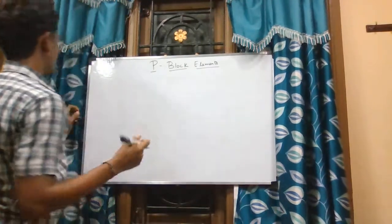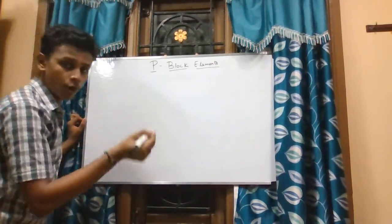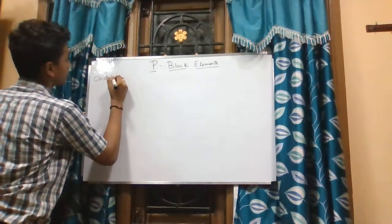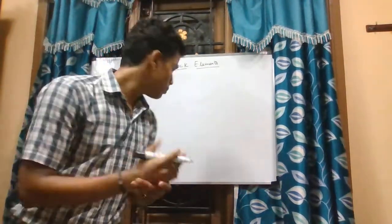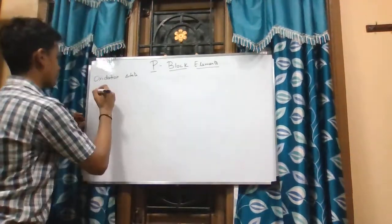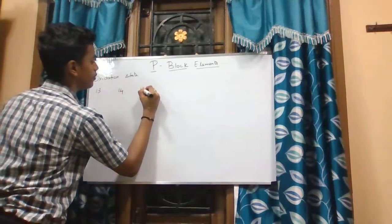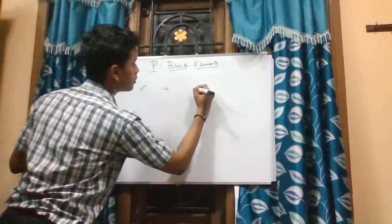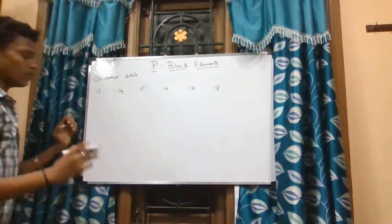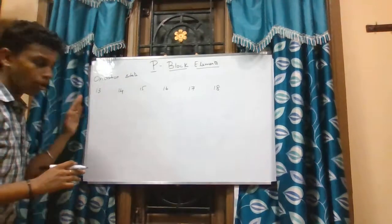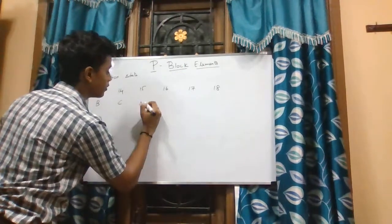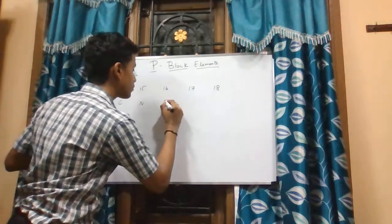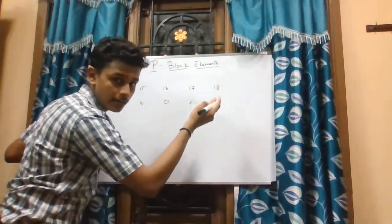We will continue with the oxidation states of P-block elements. The P-block groups range from 13 to 18. The first element in group 13 is boron, group 14 is carbon, group 15 is nitrogen, group 16 is oxygen, group 17 is fluorine, and group 18 is neon.